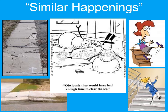This case illustrates the idea of the admissibility of what is called similar happenings evidence in tort cases. This is not covered by a specific rule of evidence but it is still a relevance issue. The classic case involves a personal injury plaintiff seeking to introduce evidence of similar accidents involving the defendant's property or product.